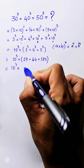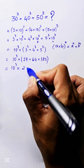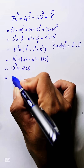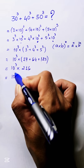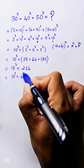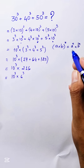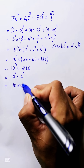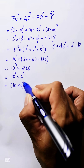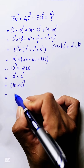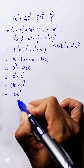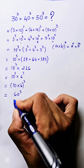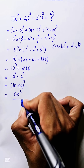Now we get 10 power 3 times 6 power 3. Using the formula again, we get 10 times 6 all to power 3, which equals 60 power 3. So the value of our expression is equal to 60 power 3.